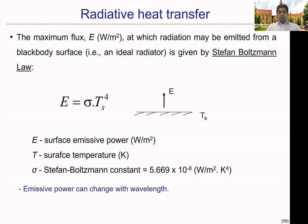Let's try to look at how we can quantify or model the energy carried by electromagnetic radiations, or in radiative heat transfer. So here we can use something called the Stefan-Boltzmann law. The maximum flux, or otherwise we call it E, in watts per meter squared, at which radiation may be emitted from a blackbody surface — normally we call a blackbody an ideal radiator — is given by the Stefan-Boltzmann law, which you might have heard before in your level physics.